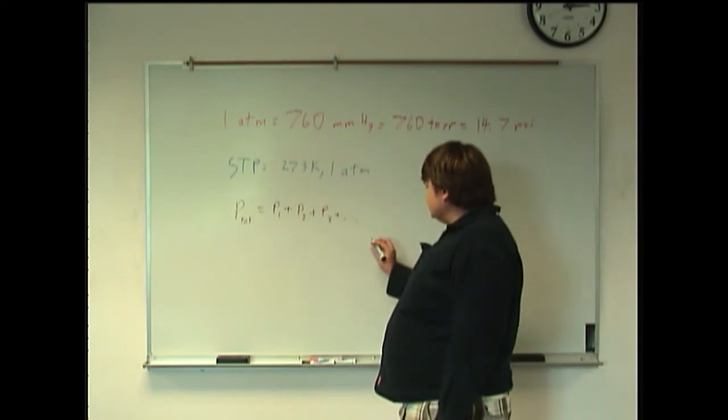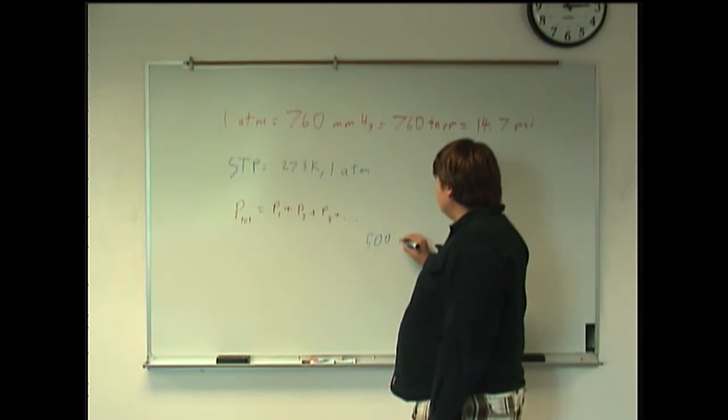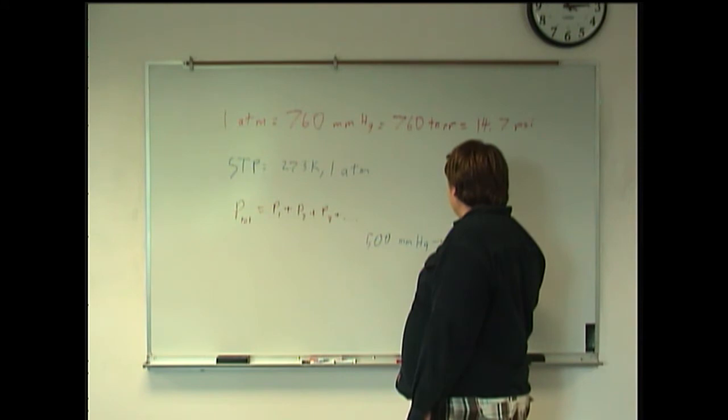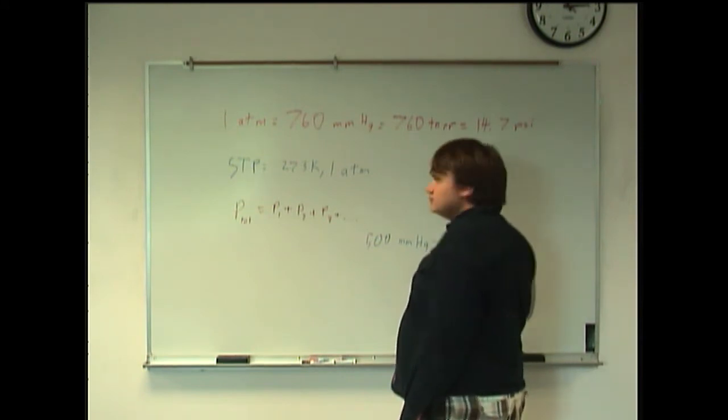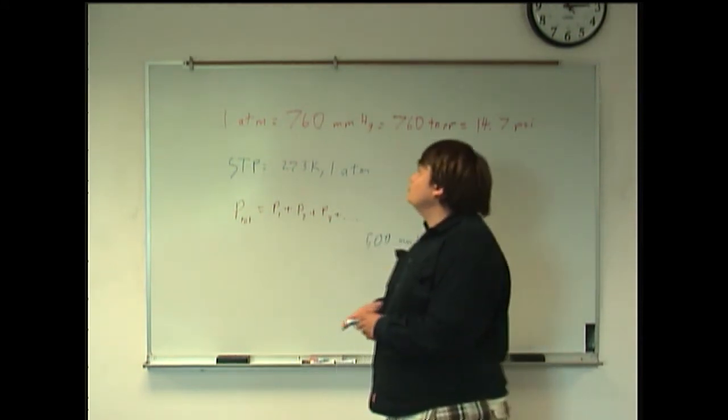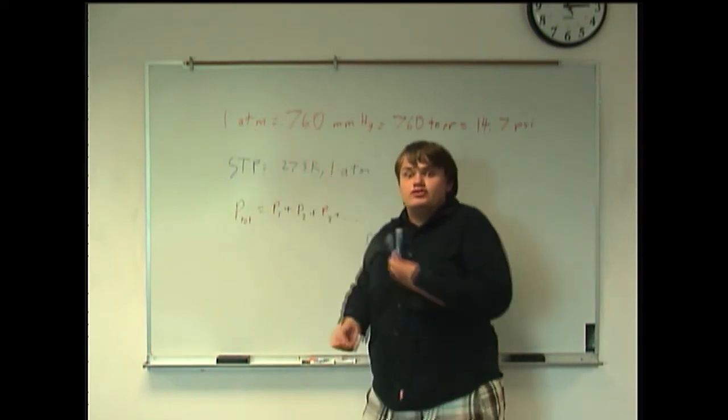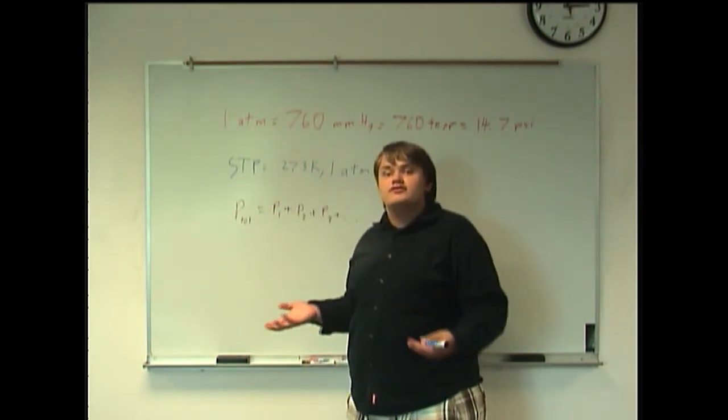So, say we had 500 millimeters of mercury. And you want to know how many atmospheres that is. Well, essentially what we have here is a conversion rate, so you'd approach it like you would with any other conversion problem.